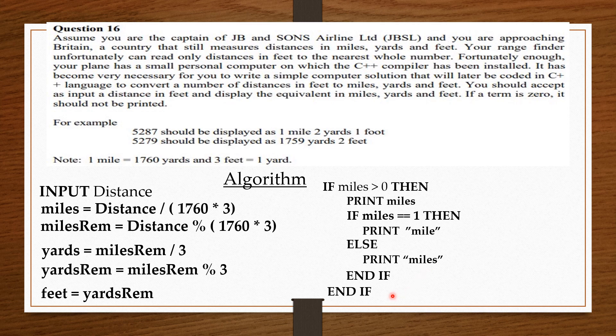Now, we are going to copy this block of if statements, and then change the miles to yards. So, we say, if yards is greater than zero, then print yards. Now, if yards is equal to one, then print 'yard', else print 'yards', end if, end if.